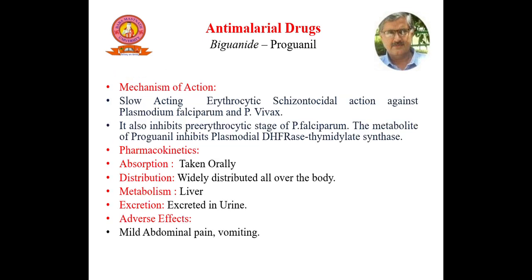Then we have the biguanide drug proguanil. Proguanil is a slow-acting erythrocytic schizontocidal drug active against Plasmodium falciparum and P. vivax. It also inhibits the pre-erythrocytic stage of P. falciparum. The metabolite of proguanil inhibits plasmodial DHFR and thymidylate synthase enzyme. Proguanil is taken orally, widely distributed all over the body, metabolized in liver, and excreted in urine. Adverse effects are mild abdominal pain and vomiting.